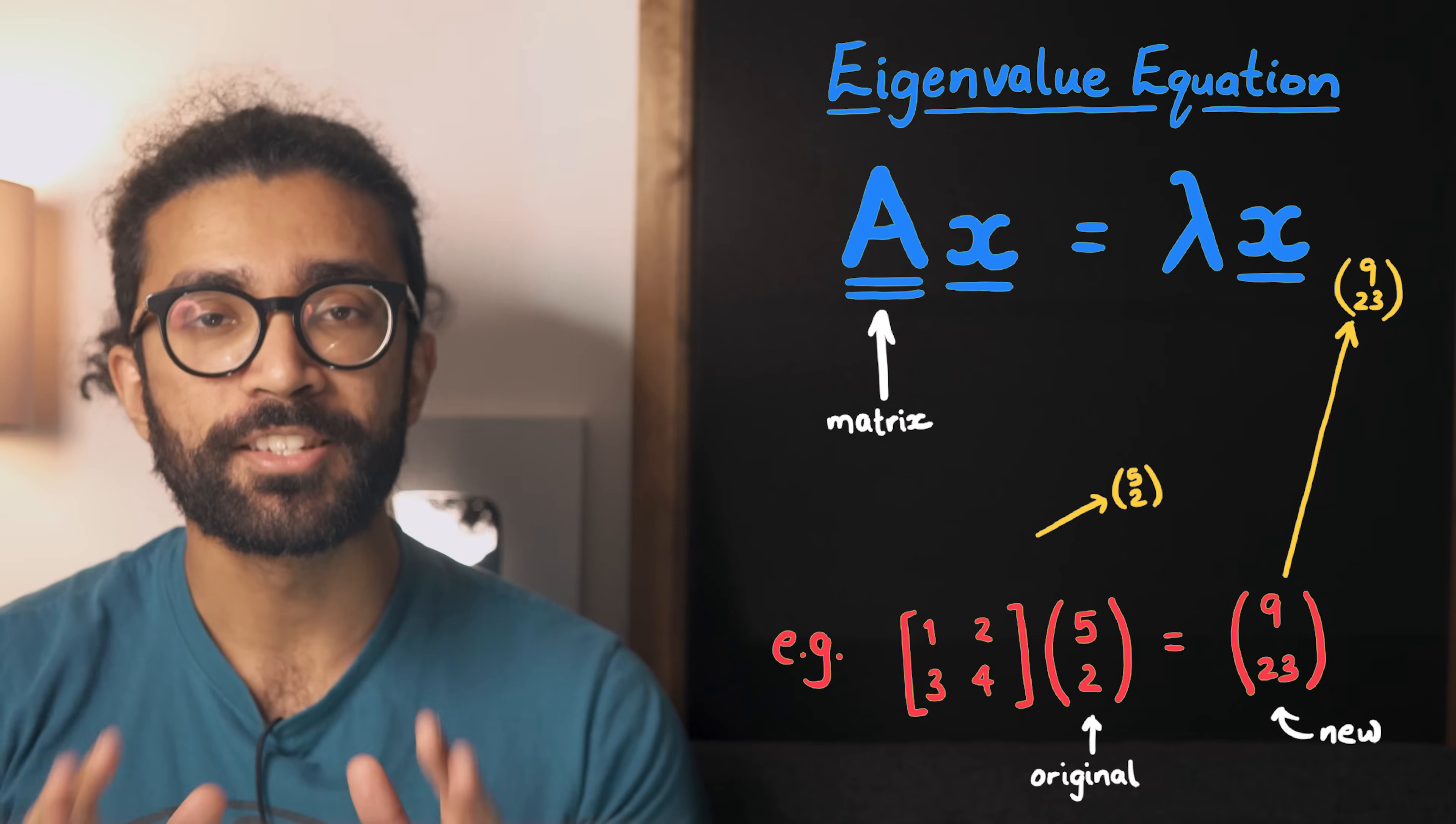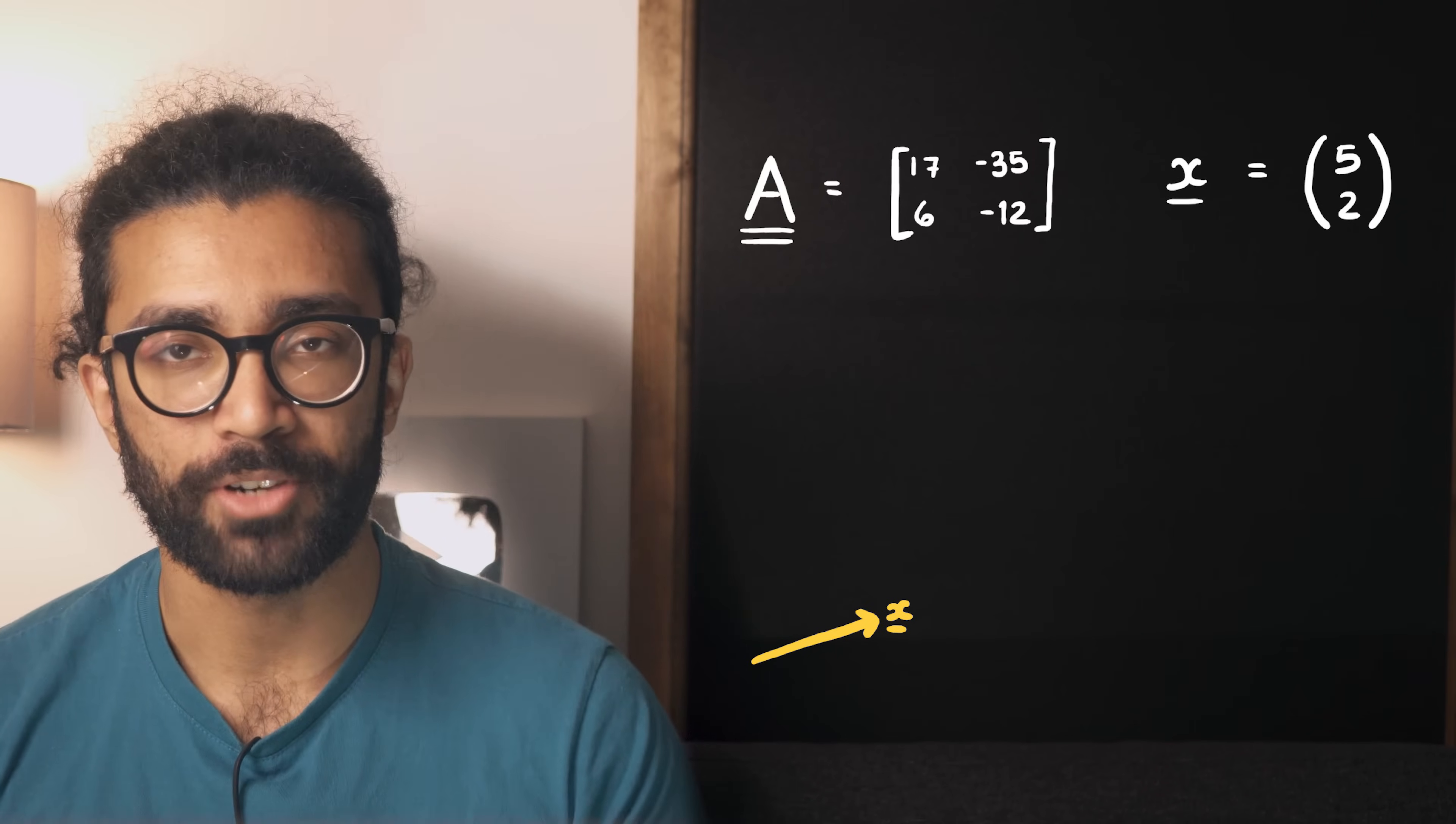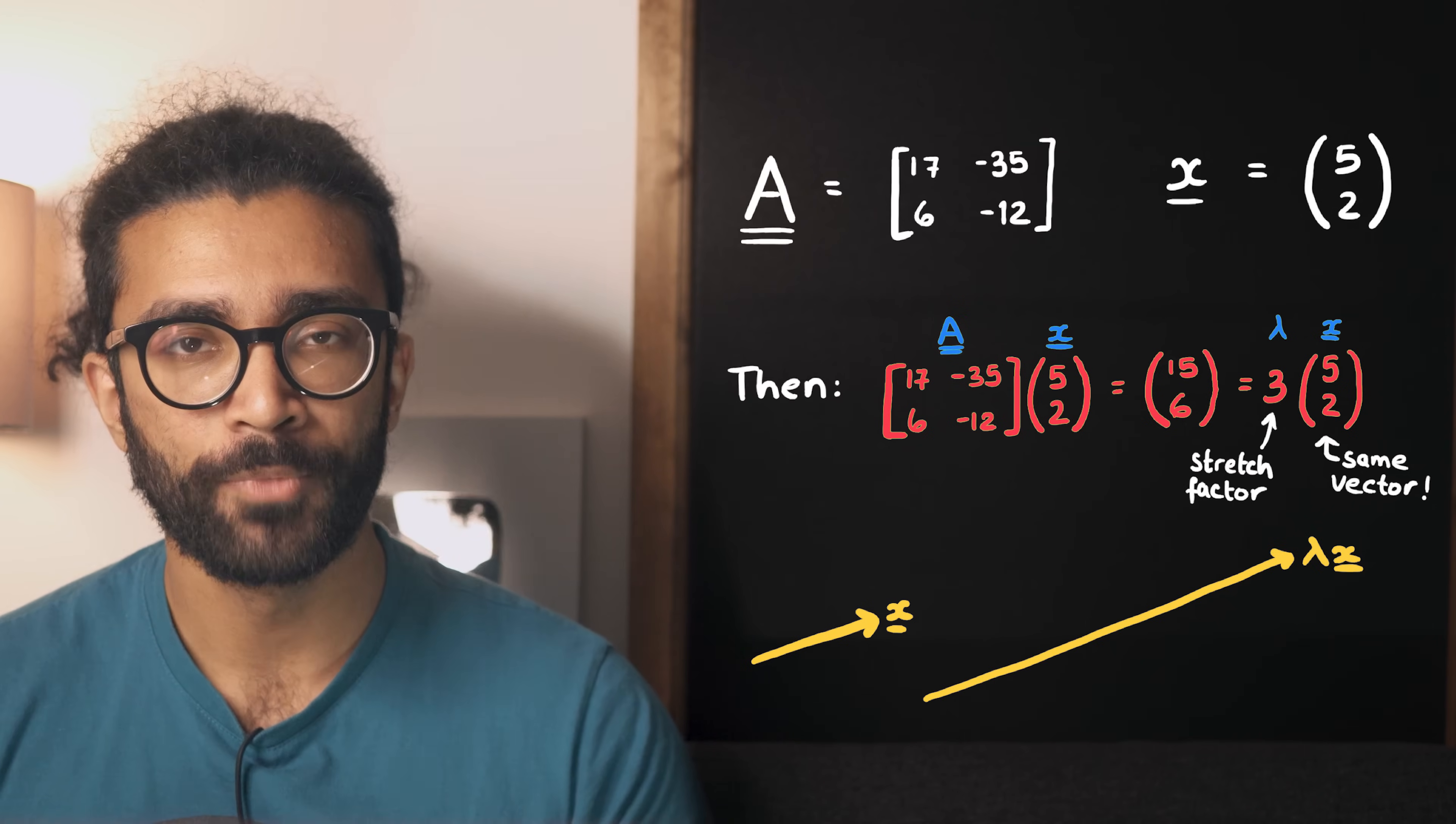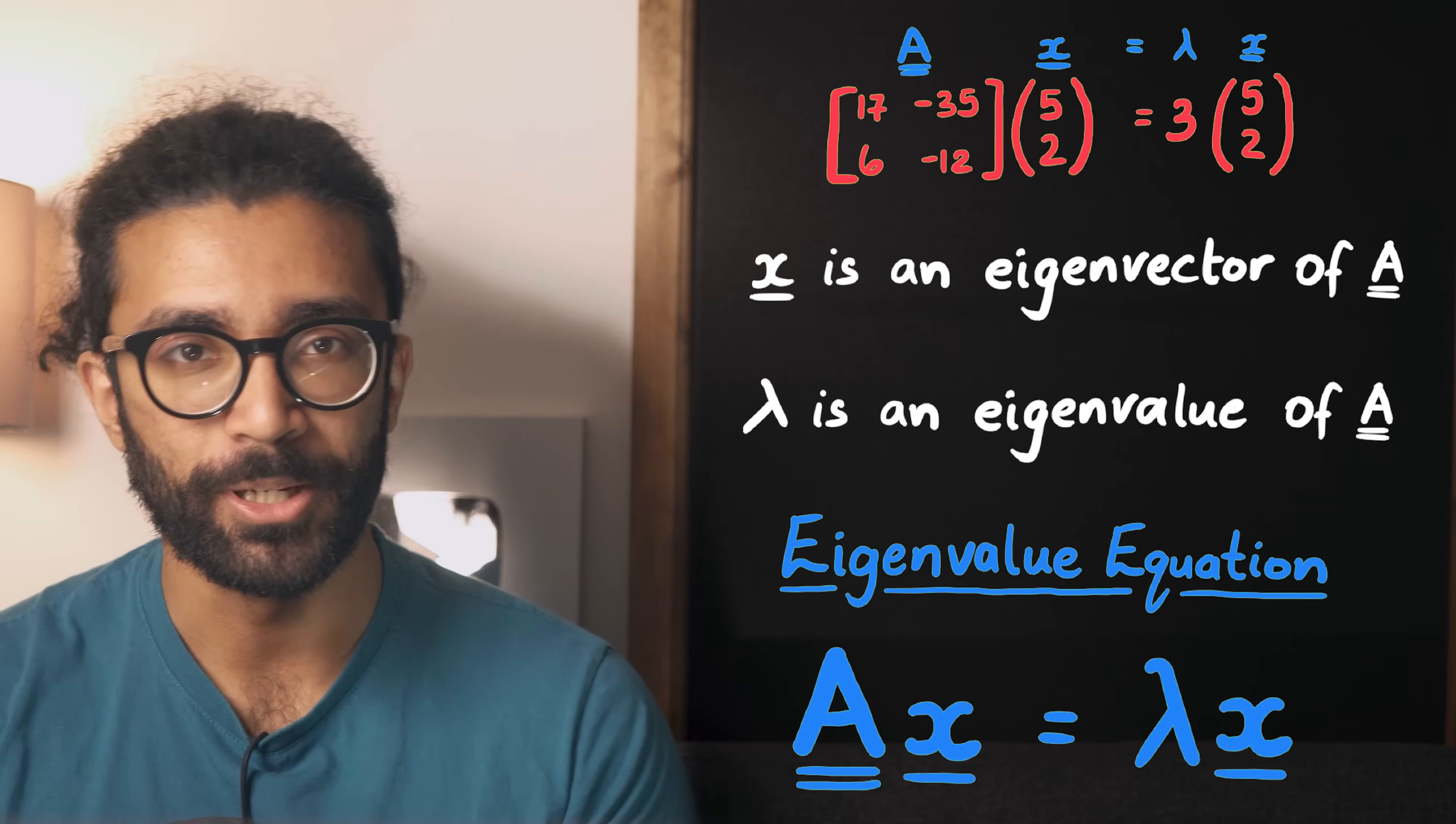But the thing is, for some matrices, we can sometimes find vectors that don't get transformed into another one, apart from maybe being stretched or shrunk. For example, here's such a vector for our original matrix. When we apply our matrix to it, the end result is a vector pointing in the same direction, just stretched by this factor. When this happens, we say that we found an eigenvector for this particular matrix. And the stretch factor is known as the eigenvalue. This is why our equation is known as the eigenvalue equation.